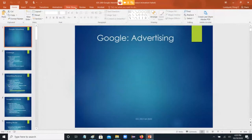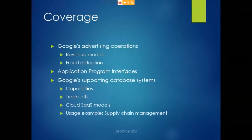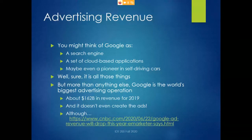Google advertising — the last of our three Google lectures. We'll cover advertising operations today, and eventually application programming interfaces and Google's supporting database systems. You might think of Google as a search engine or a set of cloud-based applications like G Suite, maybe even a pioneer in self-driving cars, but more than anything else Google is the world's biggest advertising operation at $162 billion in revenue for 2019, with around 90% or more from online ads — and the crazy thing is it doesn't even create the ads.